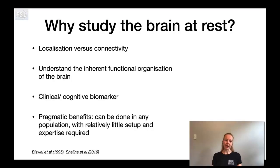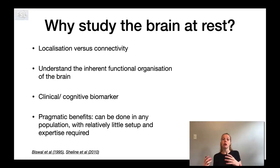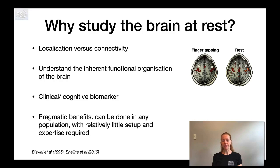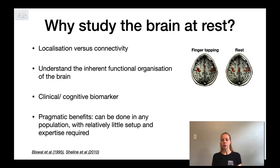Continuing the question of why study the brain at rest: one of the key driving factors is the question of localization versus connectivity. Initially the focus of imaging and MRI was localization — mapping which brain regions are performing which type of task. But over the years there was an increased interest in connectivity, meaning communication between different brain regions. This figure is from one of the first papers using resting state fMRI, showing on the left a map of activity patterns when subjects tapped with both fingers.